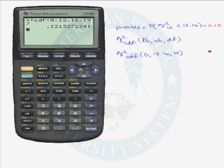From the table, we knew that our p-value is between 0.1 and 0.25, but the calculator gives us the exact probability of 0.12.